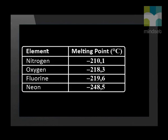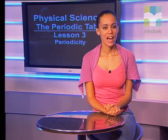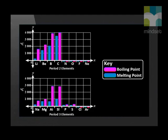Nitrogen, oxygen, fluorine and neon are gases at room temperature and have melting points below 0 degrees Celsius. There is a decrease in melting points from nitrogen to neon. Now let us look at the pattern across period 3. We can see that the same trend is evident across period 3. We can also see that non-metals have much lower melting and boiling points than metals.